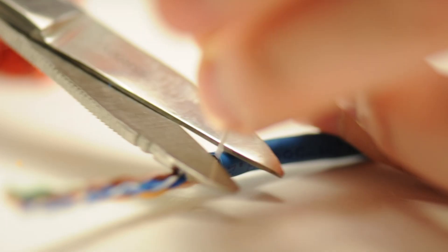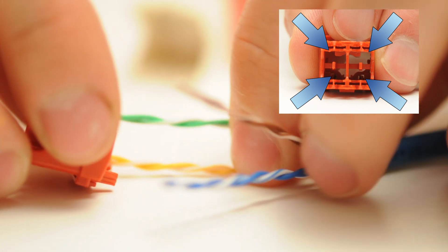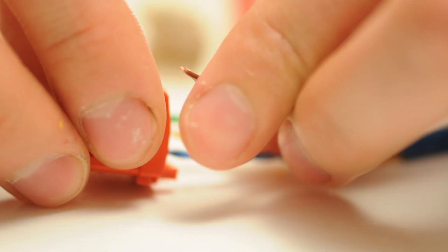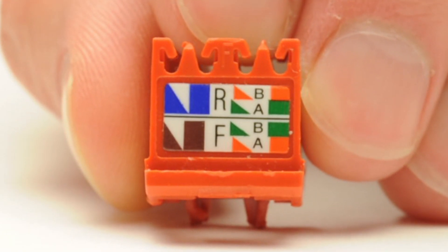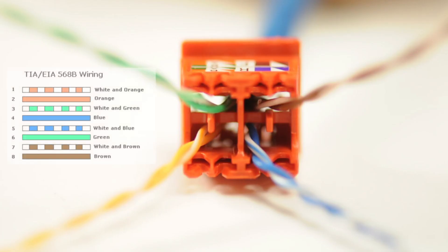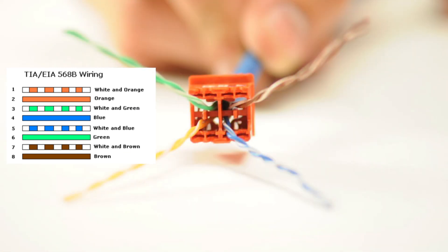You'll notice that there are four pairs and they are color coded. I'm going to insert my pairs into the back of the guide. On top of the guide there is a color code to instruct you on which way to insert the pairs. We are following the 568B color code which tells us where to insert each color.